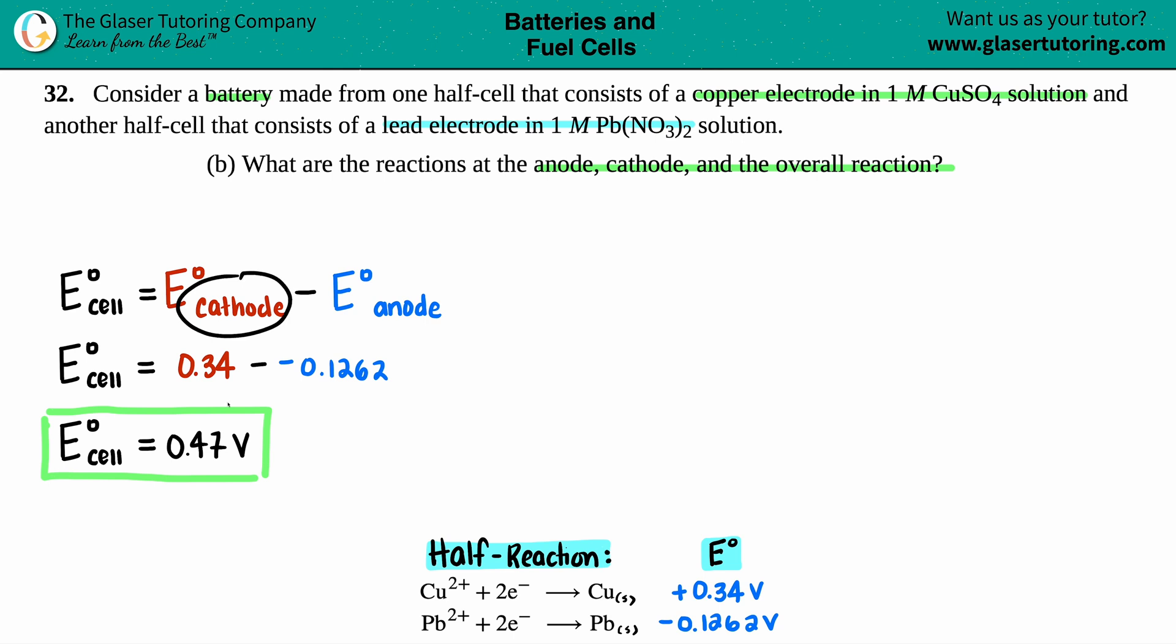The cathode for this equation was the one that was linked to the 0.34. That's the copper half cell. Now, the copper half cell has the electrons on the left side. That is always the cathode.